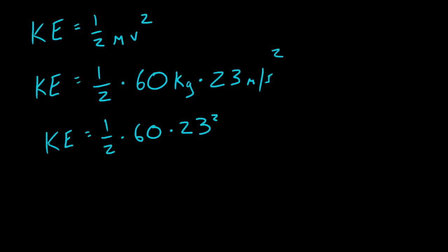One half times 60 times 23 squared. Now, I'm not going to treat you guys like idiots. I know that you know how to square this number and multiply already. So I'm just going to jump to the answer. If you want to figure this out on a calculator or in your brain, you can. But the answer to this is 15,870 joules.